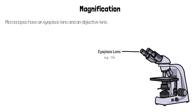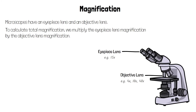There are usually three objective lenses and these have different magnifications, for example 4 times, 10 times and 40 times. To find the total magnification we multiply the magnification of the eyepiece lens by the magnification of the objective lens. So magnification equals eyepiece times objective.